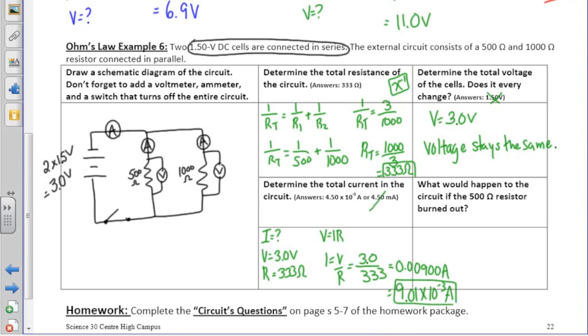Once again, ignore the answers given in your workbook. The final question for example number 6 asks what would happen to the circuit if the 500 ohm resistor burnt out? Because there's two pathways to flow, the shortcut and the long way, the other resistor would still continue to work. Don't forget to complete the questions in your workbook as well as your assignment package to make sure that you get enough practice, and ask your teacher if you have any questions.